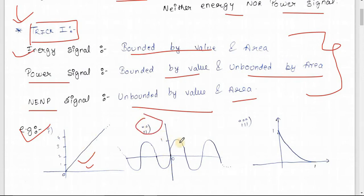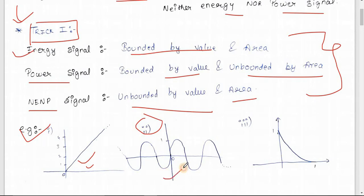In the second example, this is a sinusoidal signal where the value is between 1 and minus 1, so it is bounded by value. But the area keeps on increasing, so it is unbounded by area. Therefore, this is a power signal. Also note that every periodic signal is always a power signal.